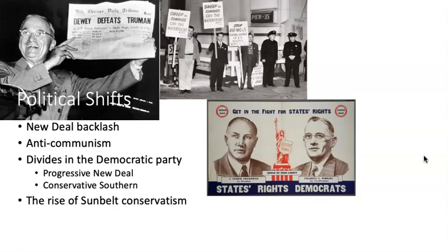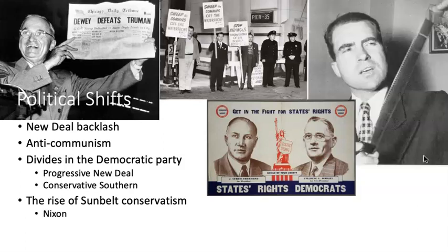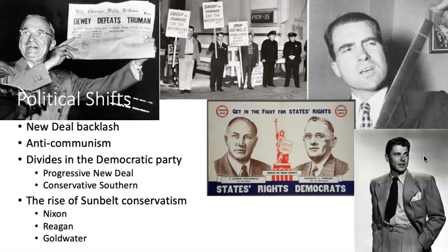We also have the rise of Sun Belt conservatism — the region stretching from Florida through Texas into the Southwest, particularly Southern California, Arizona, and New Mexico. Nixon is from Southern California; he gets the spotlight in this period because of his role in the Alger Hiss case. Reagan also from California, and Barry Goldwater from Arizona. It's a new genre of conservatism, not like Eisenhower. Post-Eisenhower, particularly post-Reagan, the Republican Party has a very particular states' rights, small-government outlook.